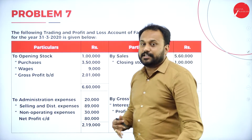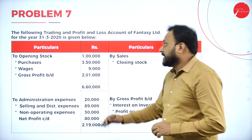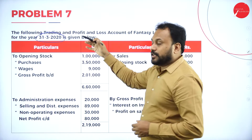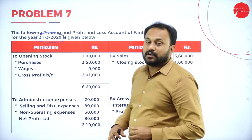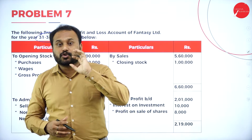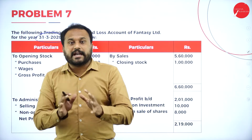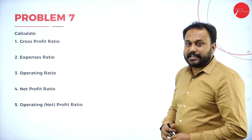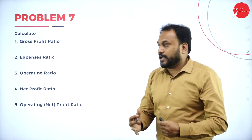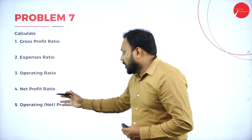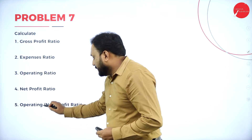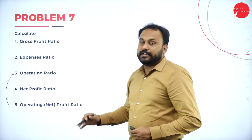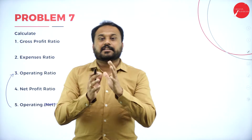Now let's go with the next problem — the seventh problem. We have a trading and profit and loss account here. The following trading and profit and loss account of Fantasy Limited for the year ending 31/3/2020 is given. We are not supposed to overthink — just go with the flow of what the question asks. They are asking us to calculate: gross profit ratio, expenses ratio, operating ratio, net profit ratio, and operating net profit ratio.